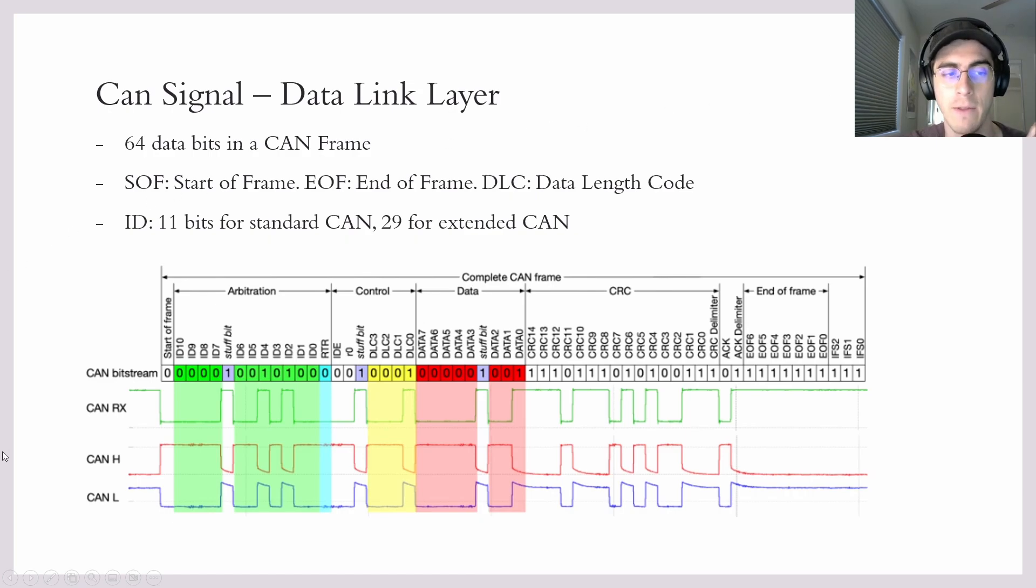And so the CAN signal has 64 bits of data, and it has a whole bunch of other metadata involved. By the way, I found this diagram on Wikipedia, and I highly recommend that if you're interested in CAN that you go read this Wikipedia page. It goes into extreme detail. I'll keep things at a bit of a higher level. I won't go into every single bit here, but I'll cover the important stuff.